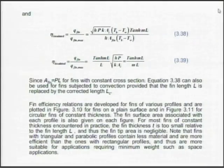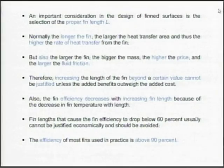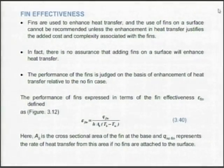We had broached up efficiency; now effectiveness. What is effectiveness? For efficiency, the reference was Q_fin upon Q_ideal — Q_fin maximum, Q_ideal. Effectiveness is Q_fin upon Q_no_fin. We have taken the best case and the worst case. Best case compared with efficiency of the fin; worst case is having no fin. So that is effectiveness.